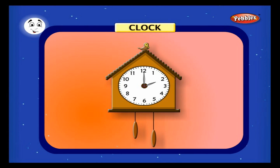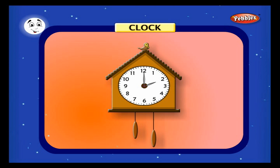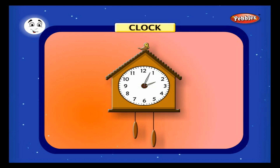Clock. Look at this clock. The face of the clock is called the dial. There are 60 divisions on it, and numbers from 1 to 12 marked at equal distances. There are two hands in the clock: the long hand is called the minute hand and the short hand is called the hour hand. The time taken by the long hand to move from one division to the other is called a minute. The minute hand takes five minutes to move from one number to another.